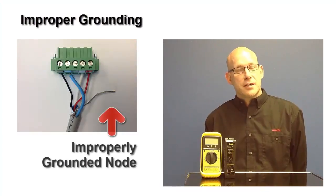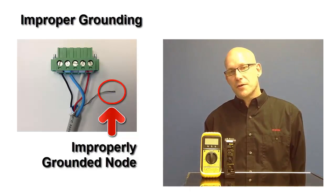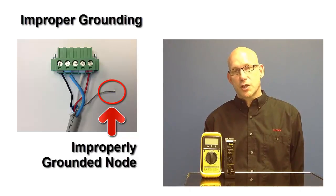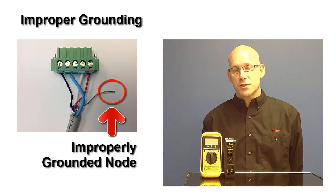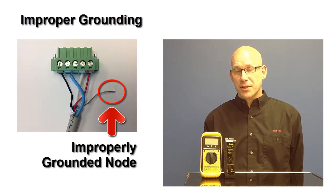And then finally, in the case of improper grounding, these meters very specifically look at the shield voltage level, which is going to be an indicator if the shield is grounded or if it's properly terminated to the ground.